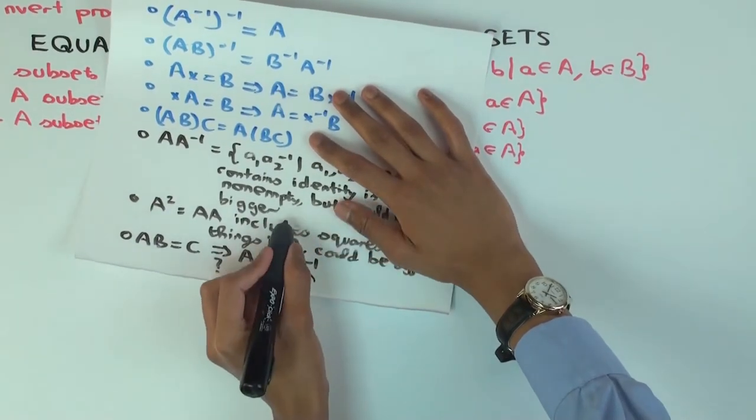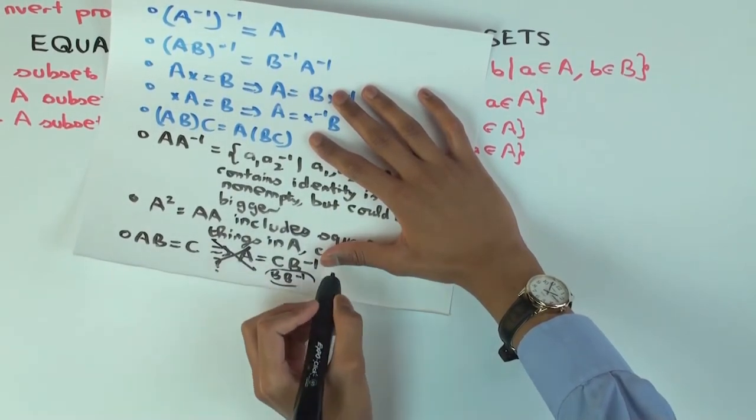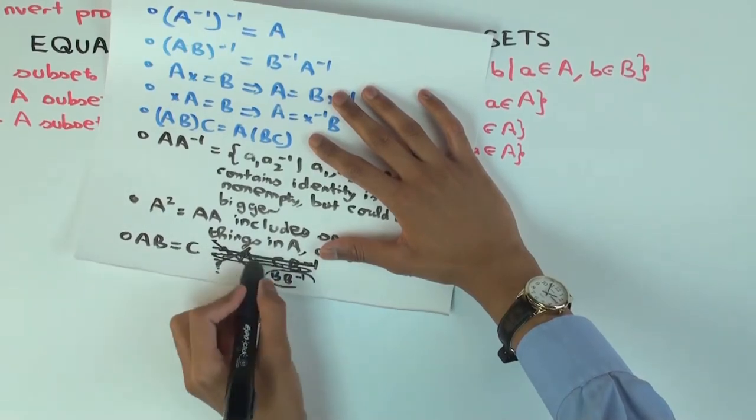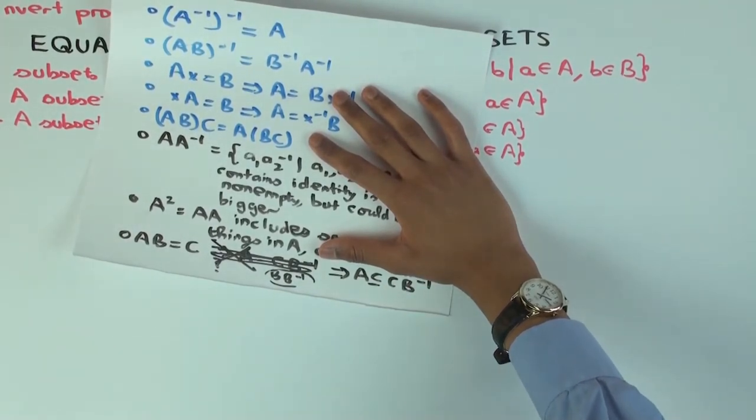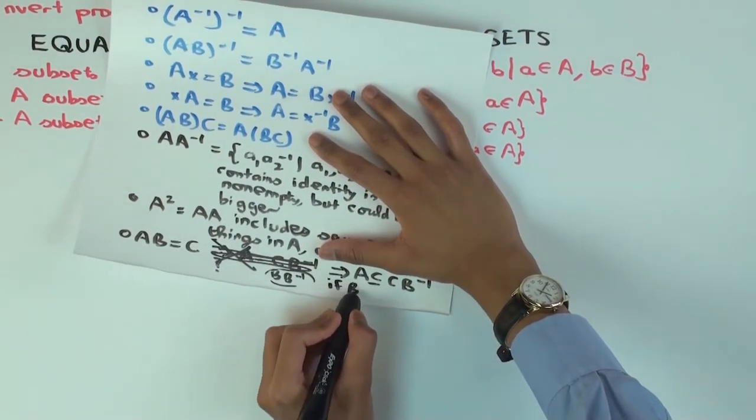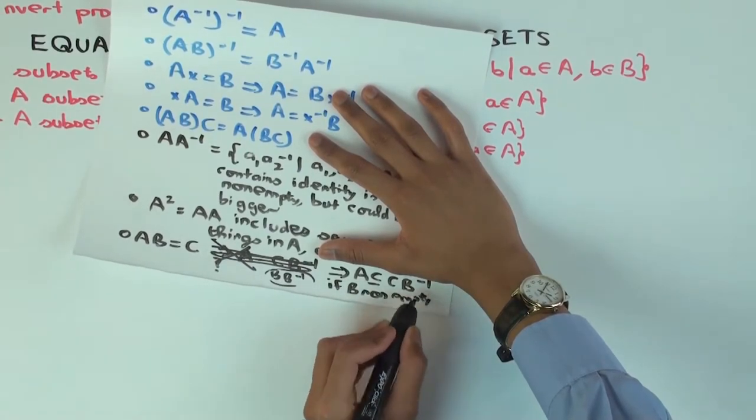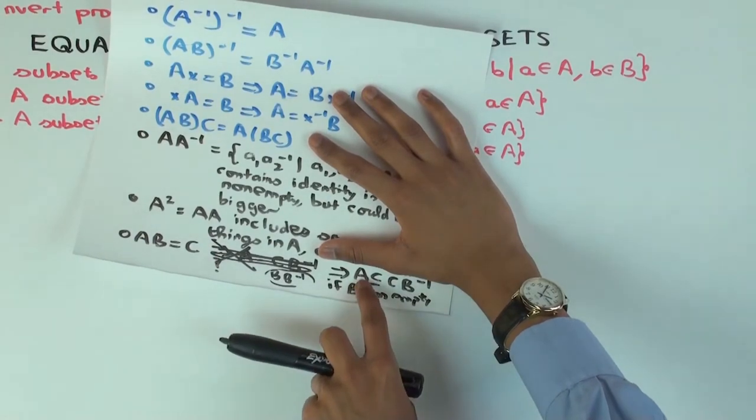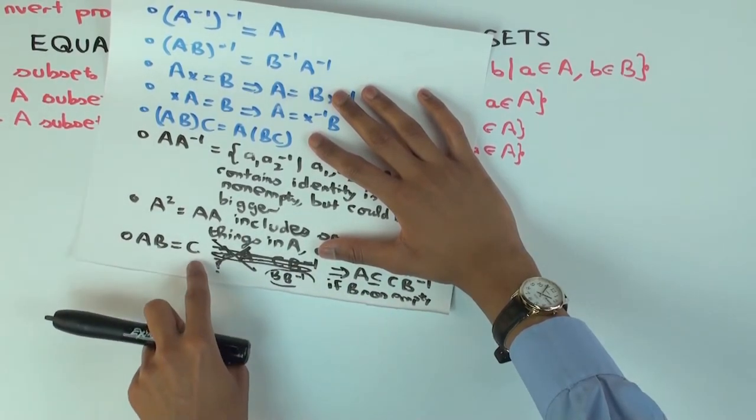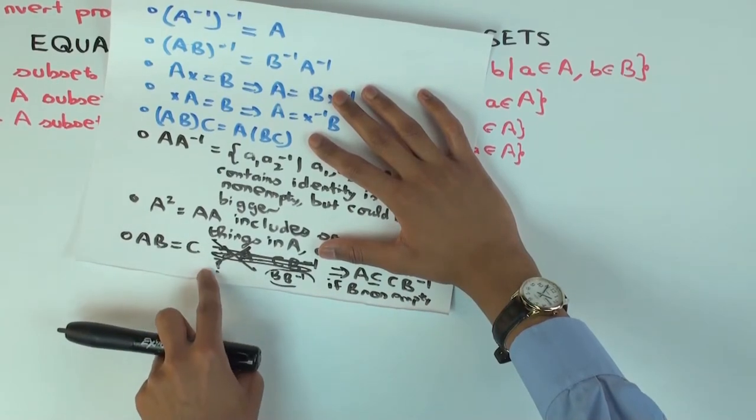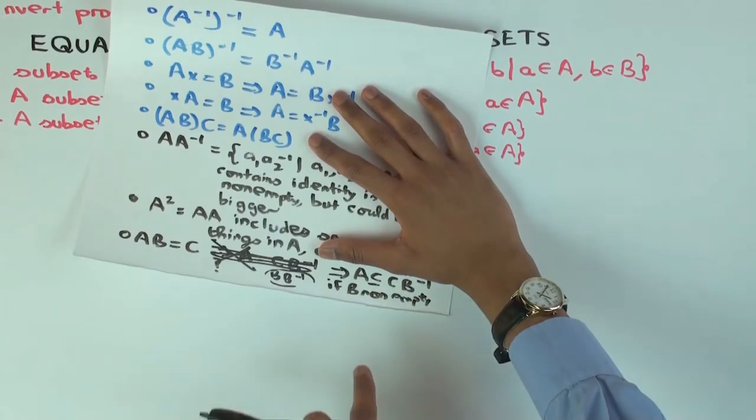However, we can say something which is similar to this. We can say instead, so this is not true, but we can say that A is contained in C, B inverse. Do you see that? Why? Well, think about anything in, if B is non-empty. So if B is non-empty, pick any element in A, and pick a fixed element of B. Then that element of A times that element of B is in C, so that element of A can be written as something in C times the inverse of that element of B. So every element of A is in C, B inverse, but you need B to be non-empty because you need to use the element of B to move around.